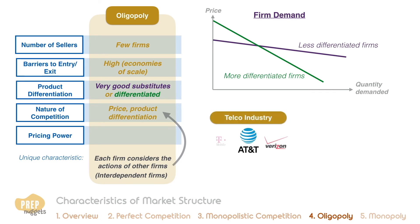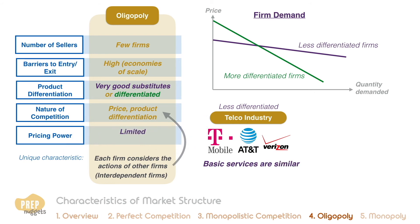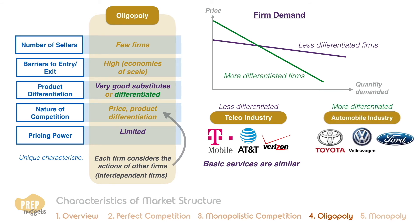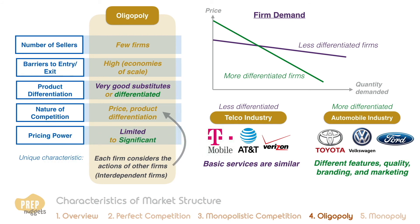The telco industry is a good example of an oligopoly with less differentiated firms. The basic services they provide are quite similar, so they have limited pricing power. On the other hand, the automobile market is an oligopoly in which firms differentiate themselves on features, quality, branding, and marketing. Such car makers have significant pricing power, resulting in more inelastic demand and greater variance in car prices.